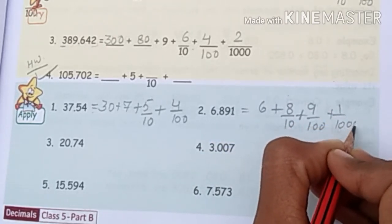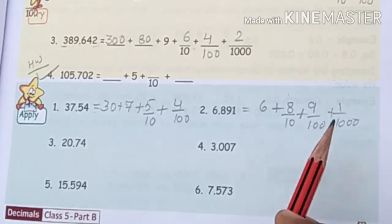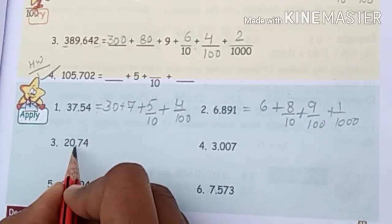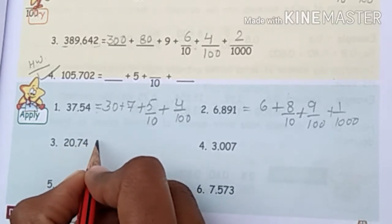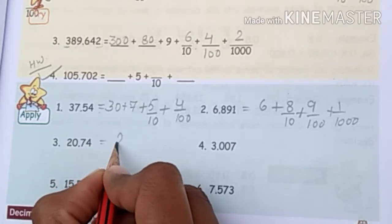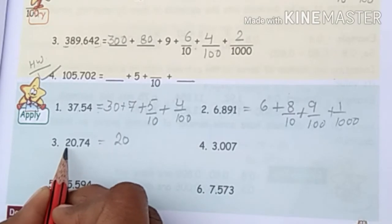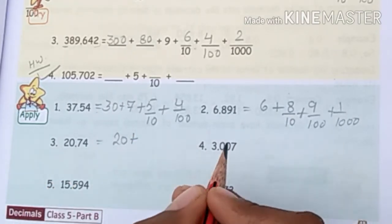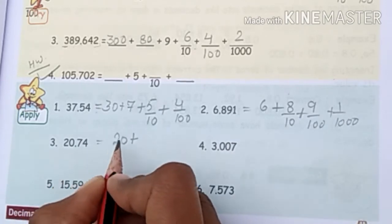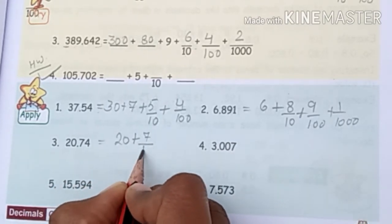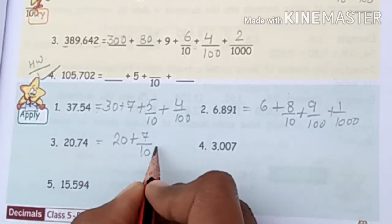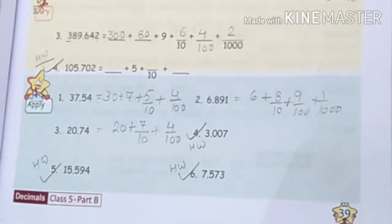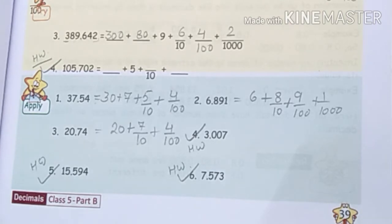Question number 3: 20.74. For 20, the ones digit is 0 and the tens value is 20. We do not write 0 since it has no value. Then just after the decimal is 7, so 7 upon 10. The second decimal digit is 4, so 4 upon 100.